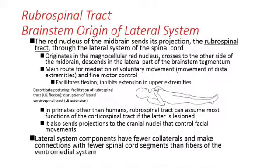In primates other than humans, the rubrospinal tract can actually take over almost completely for the functions of the corticospinal tract if the corticospinal tract is lesioned. But that's not really the case with humans — humans really need the corticospinal tract to be intact for normal movement, although with no corticospinal tract there could be some rudimentary movements possible in the distal extremity.